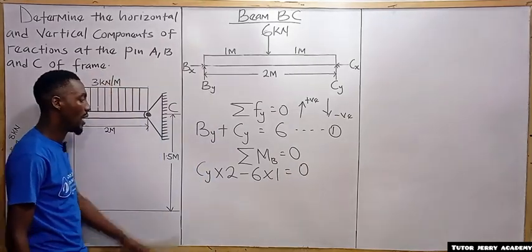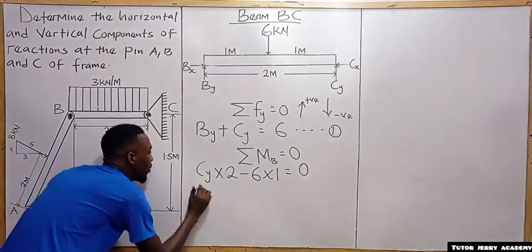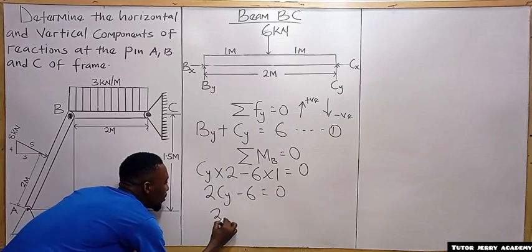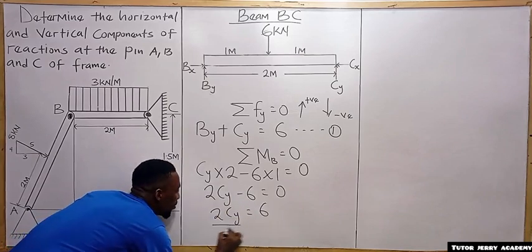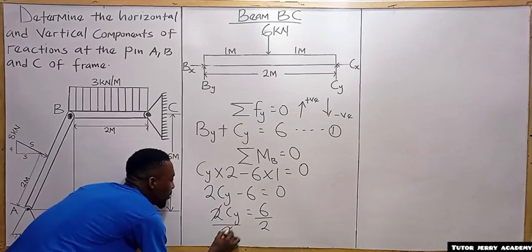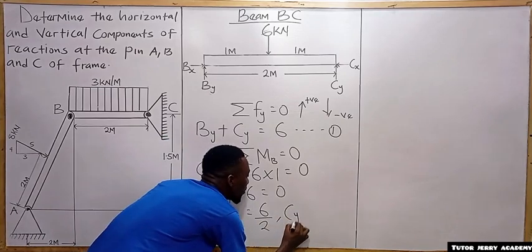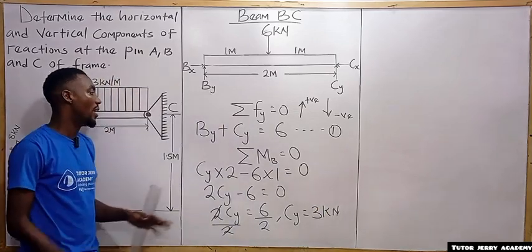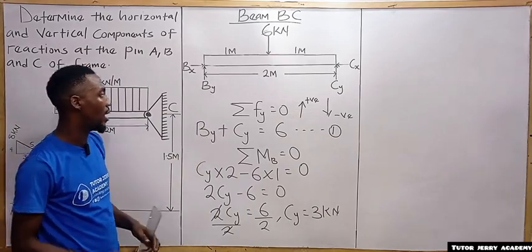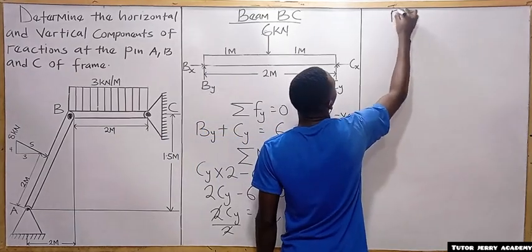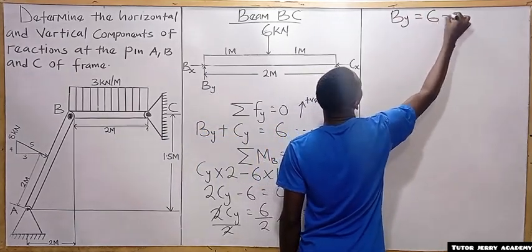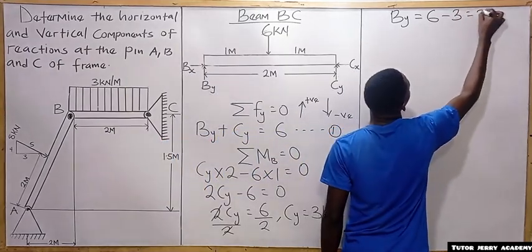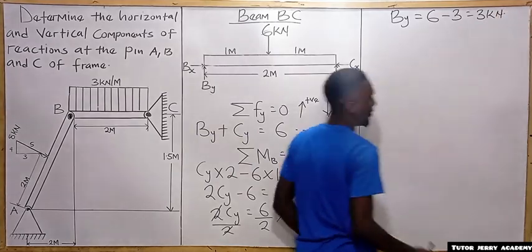Solving: 2·C subscript y minus 6 = 0, so 2·C subscript y = 6, and C subscript y = 3 kN. Substituting into equation one: B subscript y = 6 minus 3 = 3 kN.